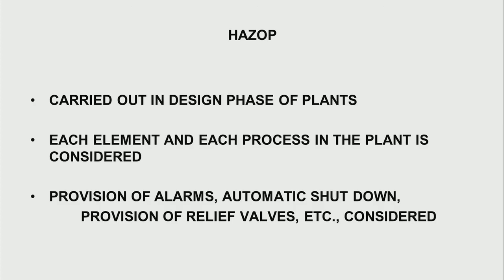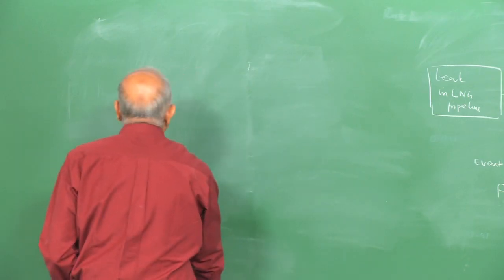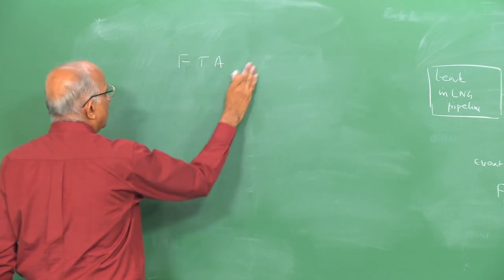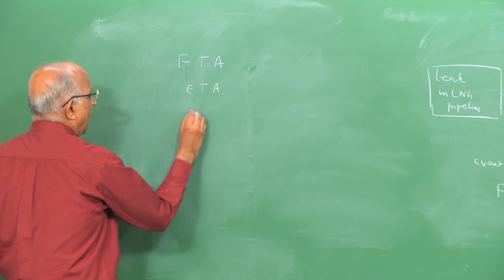HAZOP analysis is carried out even before the plant gets commissioned — during the design phase itself. We sit through each of the processes in the plant and make sure no untoward event is possible. Each and every element is considered, and provisions for alarms, automatic shutdown, automatic starting, relief valves, and so on are considered while doing the HAZOP analysis. This is the third type of analysis: HAZOP analysis.